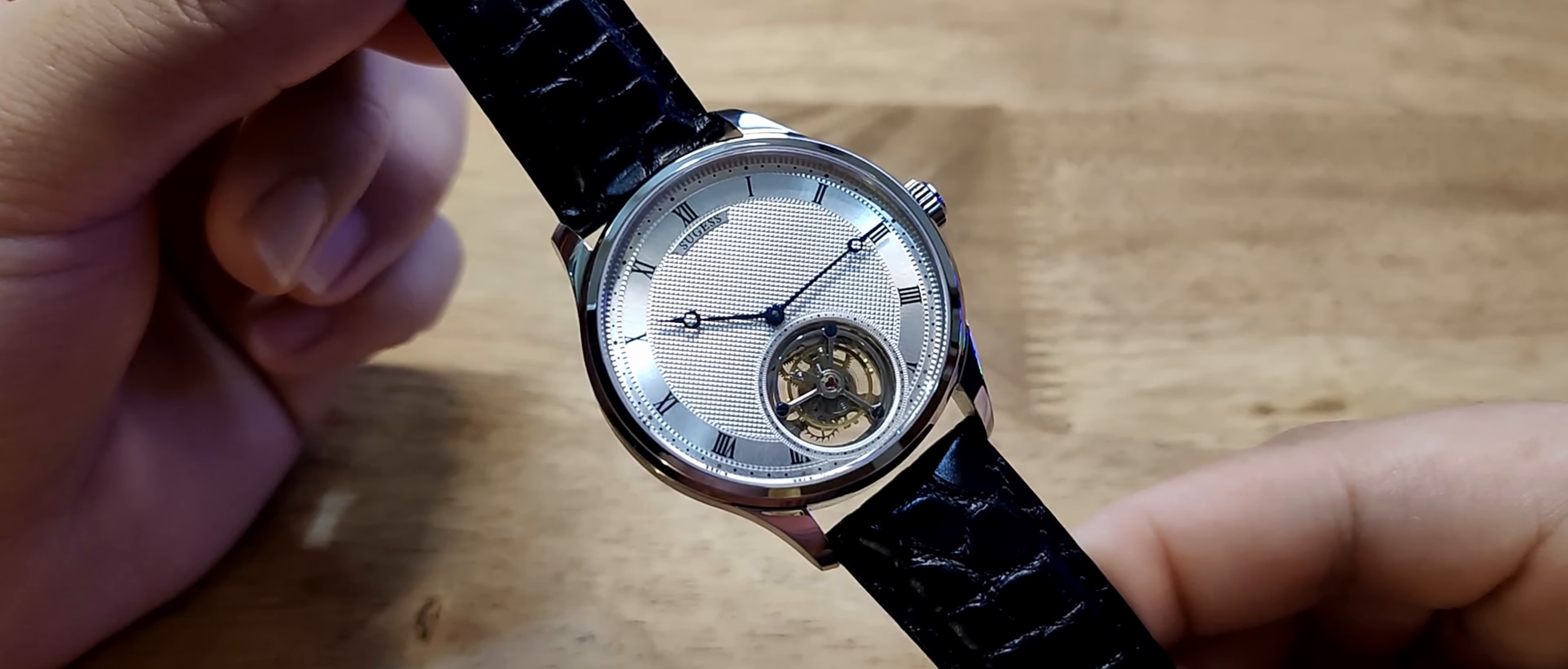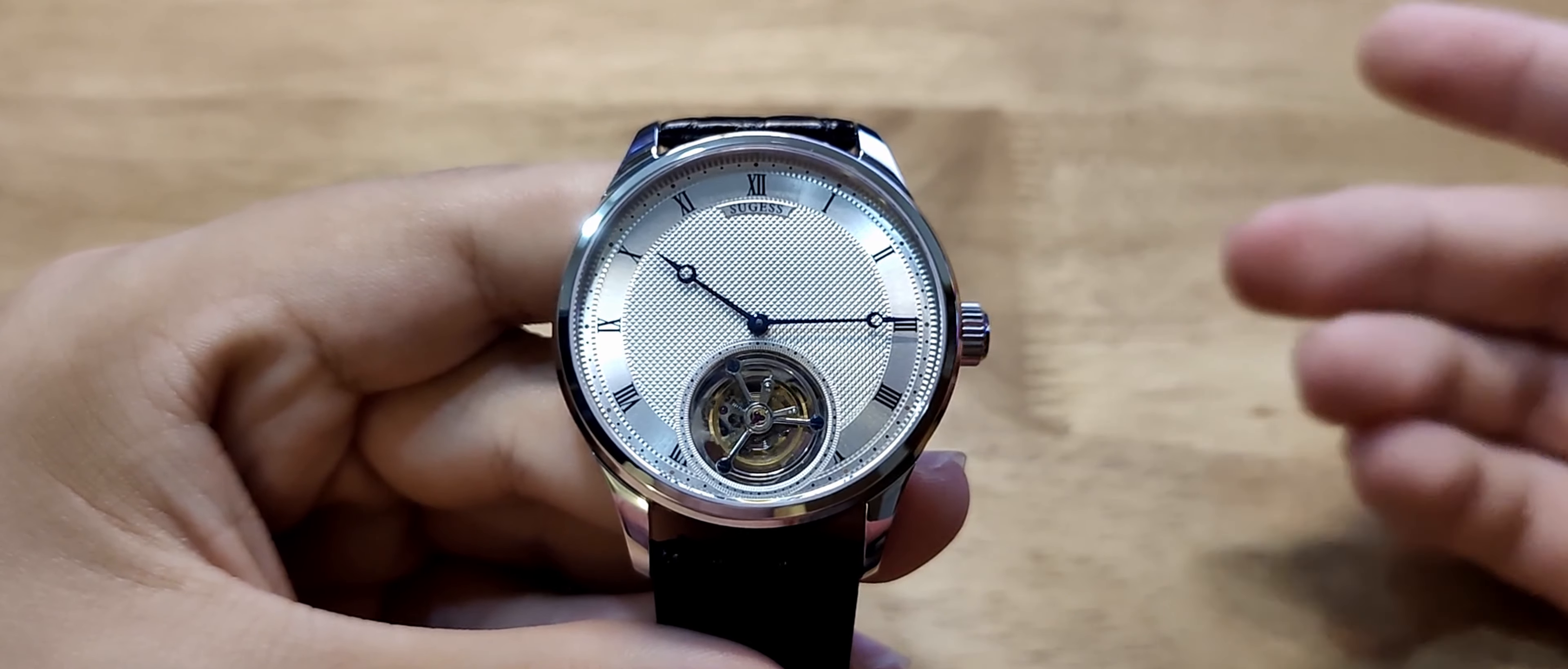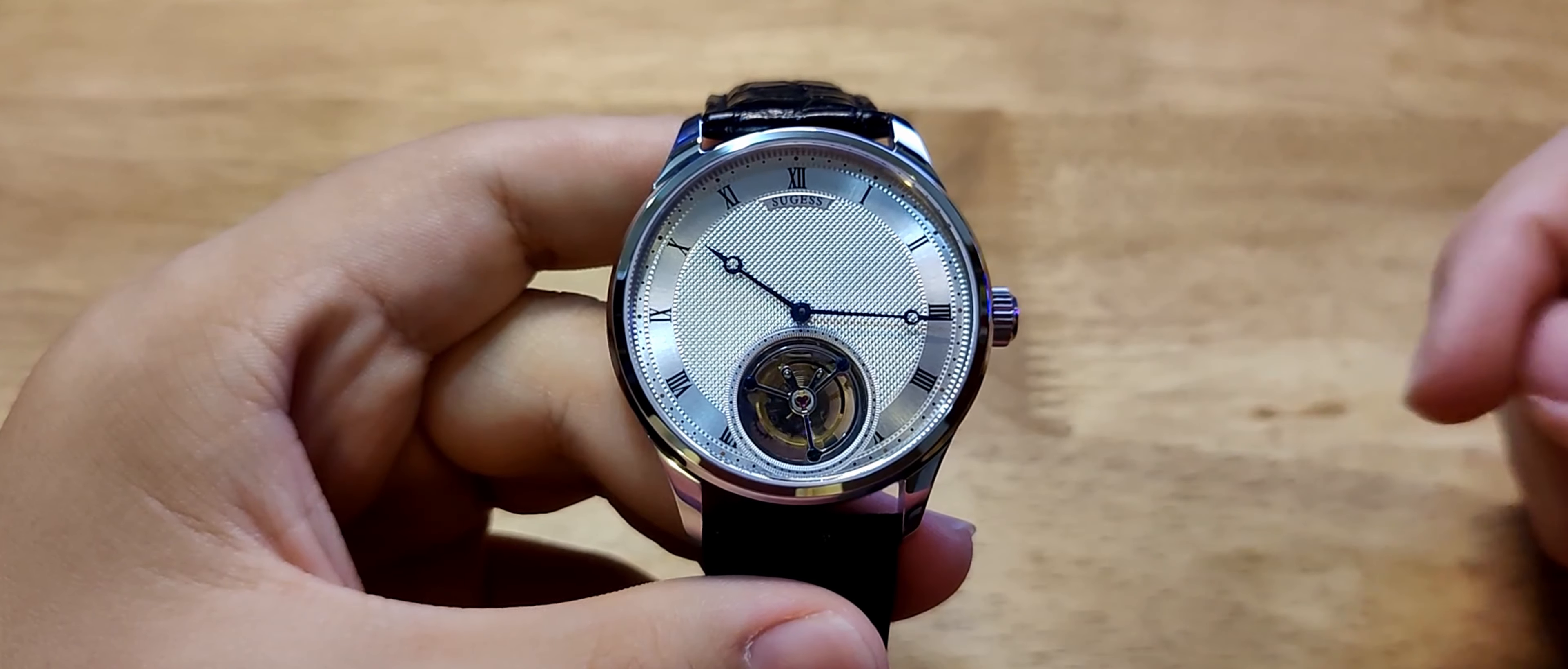Now of course, before my purchase, there were a multitude of considerations I had to make. Considerations that range from: do I have $600 to spare, do I really want a tourbillon that bad, and what do I do if the watch decides to break on me? That last question is probably shared amongst most people who have even had an inkling of an urge to buy one of these cheap Asian tourbillons.